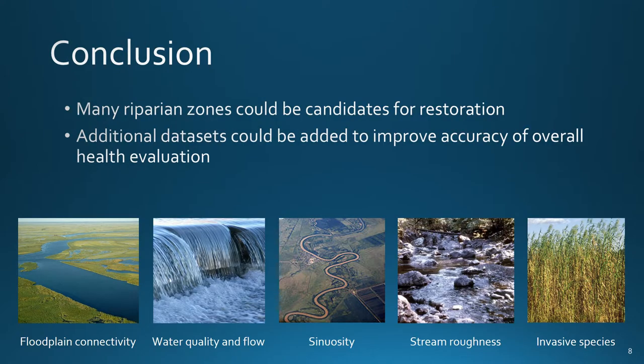Future iterations of this model, if used to signify and identify unhealthy riparian ecosystems as potential candidates for restoration projects, might include additional data to render a more accurate depiction of overall ecosystem health. Suggested data for possible future projects include connectivity to a floodplain, water quality and flow data, sinuosity of the stream channel, and stream roughness, as well as spatial data on native and non-native vegetation.